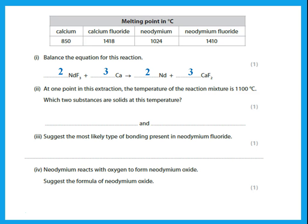At one point in this extraction the temperature of the reaction mixture is 1100°C. Which two substances are solids at 1100°C? To be solid at a certain temperature, the melting point must be higher than that temperature. Looking for melting points above 1100°C — that is calcium fluoride and neodymium fluoride. The most likely type of bonding in neodymium fluoride is ionic, given its very high melting point.